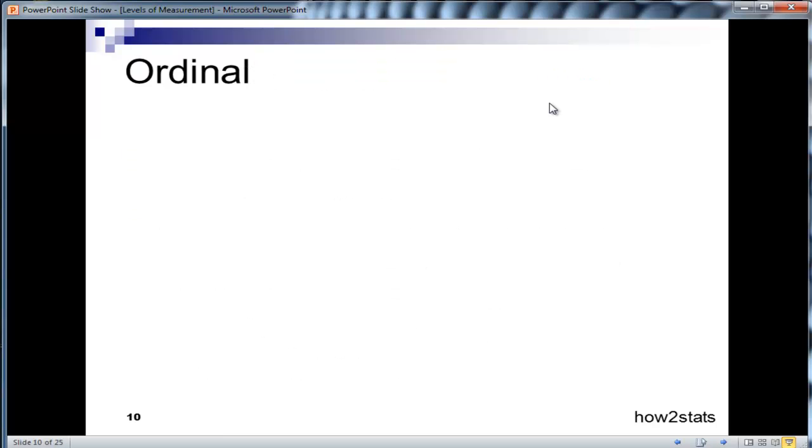What about an ordinal scale? That's the next level in terms of Stanley Stevens' level of measurement. We're still dealing with categories in an ordinal scale. But the categories actually have an order to them that's meaningful.